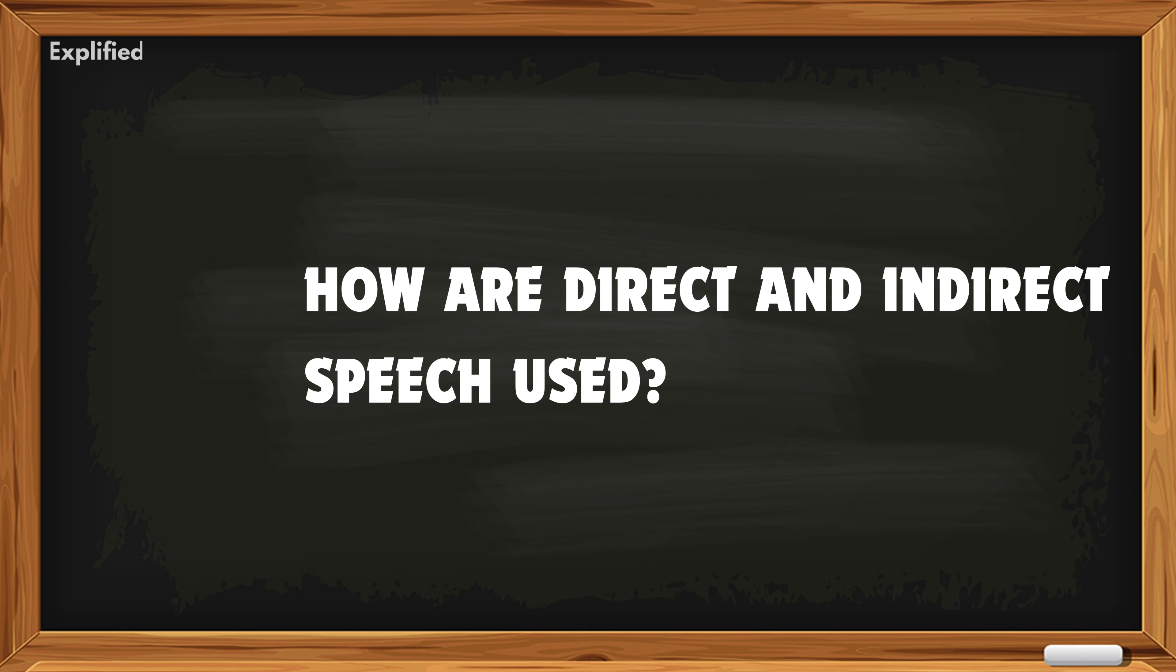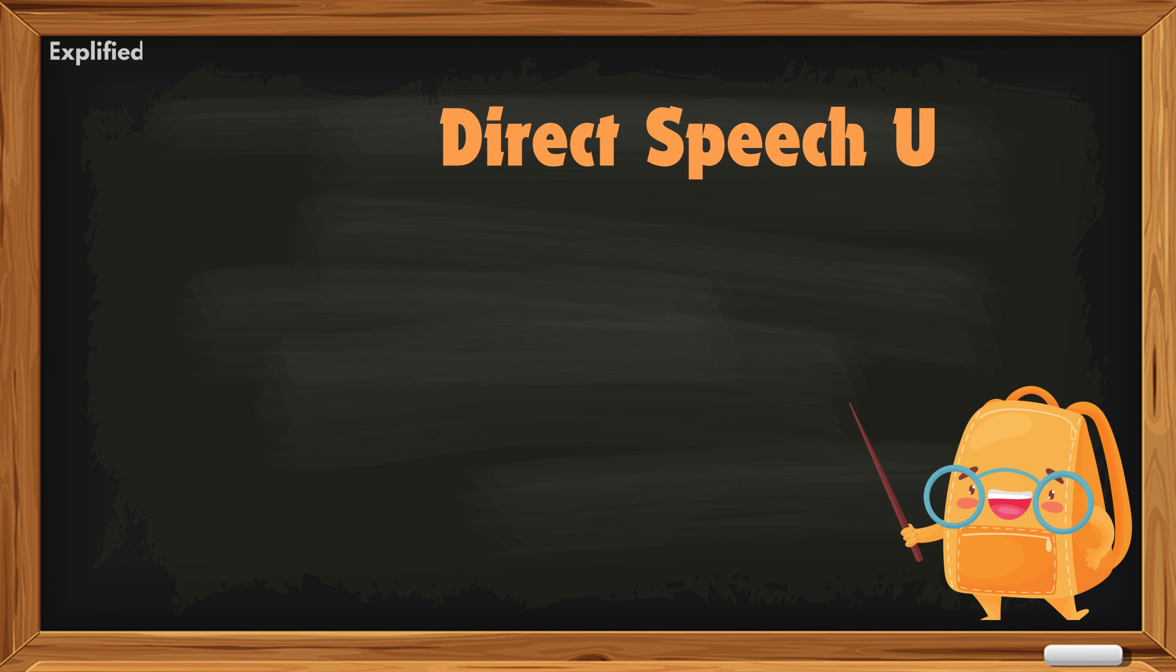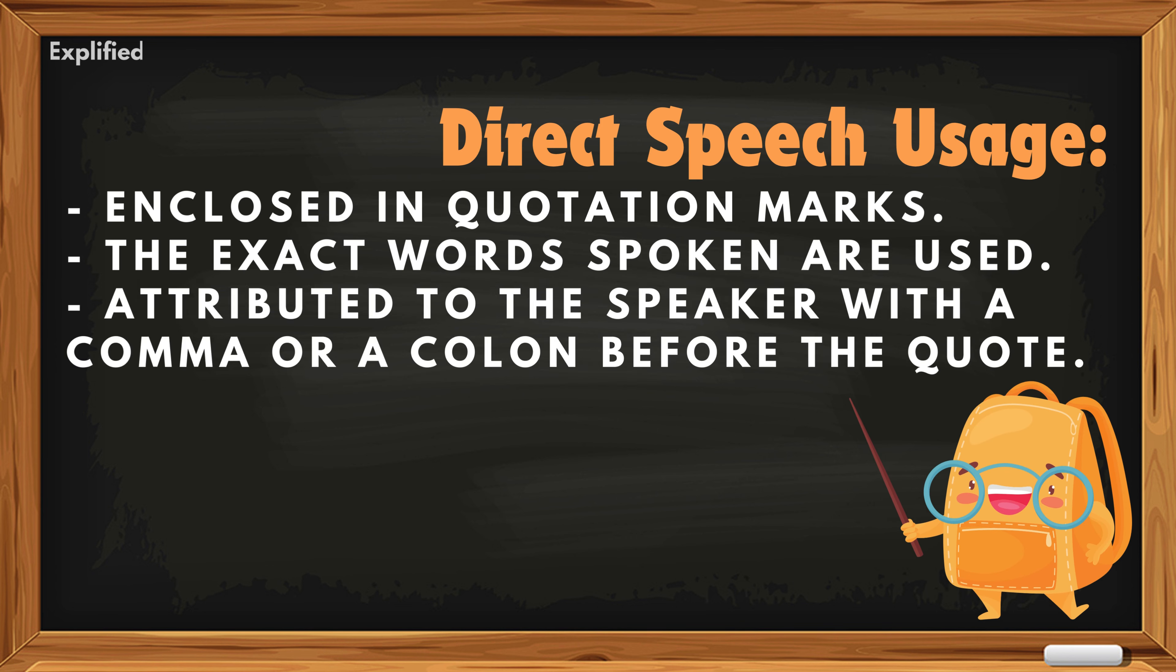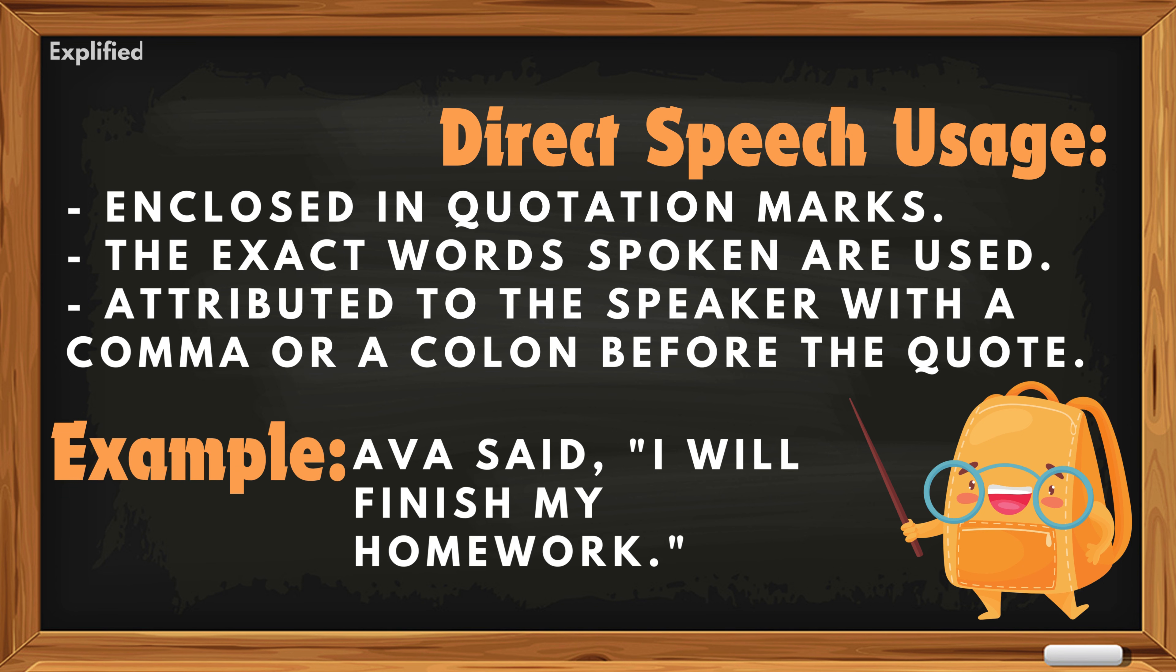How are direct and indirect speech used? Direct speech usage: enclosed in quotation marks, the exact words spoken are used, attributed to the speaker with a comma or a colon before the quote. Example: Ava said, I will finish my homework.